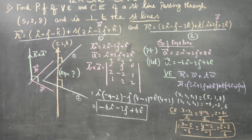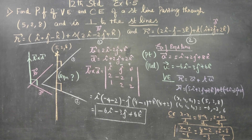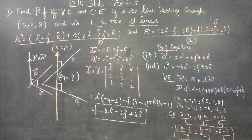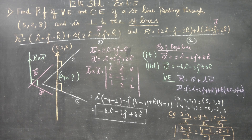This is a typical model problem. From the parallel direction vectors of the two given lines, you have to find the cross product to get the perpendicular direction, which will be parallel to the required line passing through (5, 2, 8). Thank you.